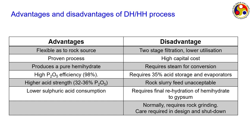The DHH process is flexible irrespective of rock source, is a proven process, produces a pure hemihydrate with P2O5 recovery of 98 percent, and offers higher acid strength and lower sulphuric acid consumption. Disadvantages include two-stage filtration with high capital cost, requires steam for conversion, requires 35 percent acid storage, rock slurry feed is unacceptable, requires final rehydration of hemihydrate to gypsum, normally requires rock grinding, and care is required in design and shutdown.